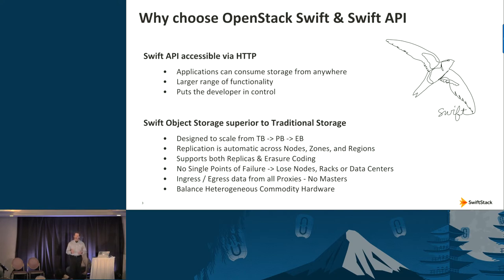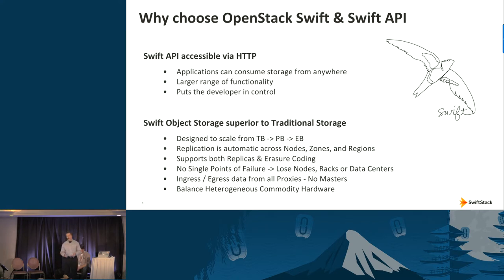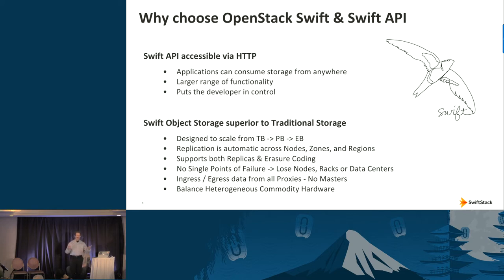The API gives developers more control. You have advanced commands like server-side copy, versioning, and object expiration — things that no file system can normally do — and it puts them in the hands of developers. Developers can also choose a storage policy that says where data will reside: a single data center, multiple data centers, or a certain tier of storage. These aren't things you can do with block or file systems.